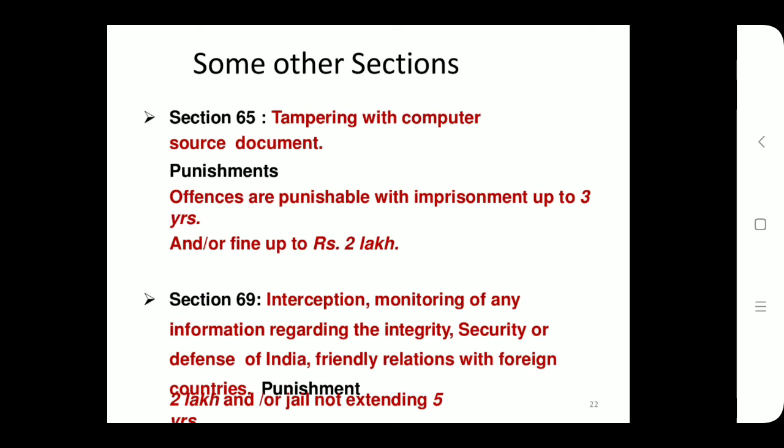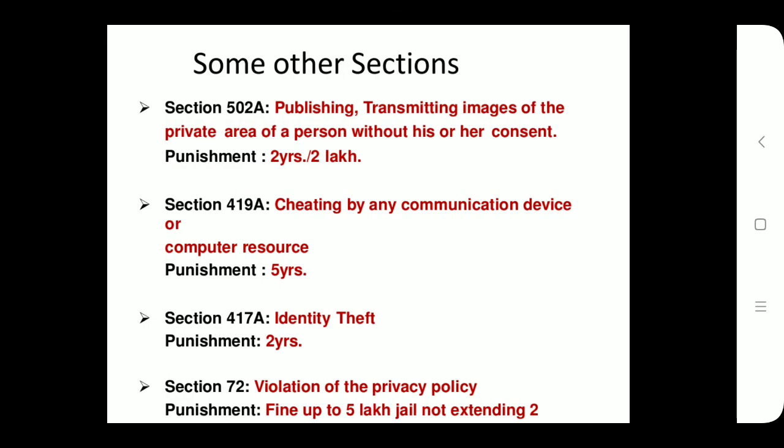Section 69 covers the interception and monitoring of any information regarding the integrity, security, or defense of India and its relations with foreign countries. Section 66E covers publishing and transmitting the private images of a person without their consent, with a punishment of up to two years or a fine of two lakhs. Section 66C covers cheating by personation using a communication device or computer, punishable up to five years. Section 66D covers identity theft, with a mandatory two-year jail term. Section 72 deals with violation of privacy policy, with a fine up to five lakhs.